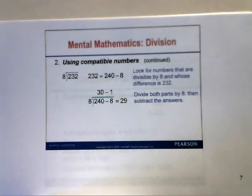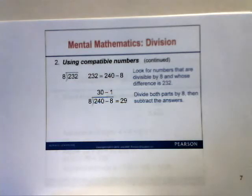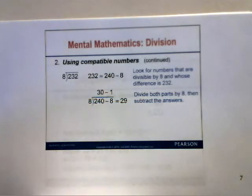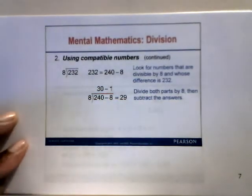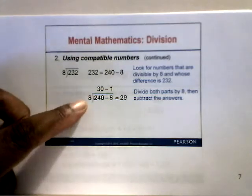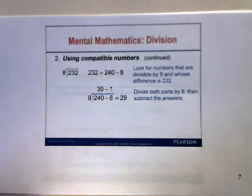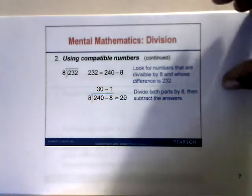For 232 divided by 8, find a number divisible by 8 close to 232. Use 240 minus 8. Divide 240 by 8 to get 30, divide 8 by 8 to get 1, then subtract: 30 minus 1 equals 29. So 232 divided by 8 equals 29.